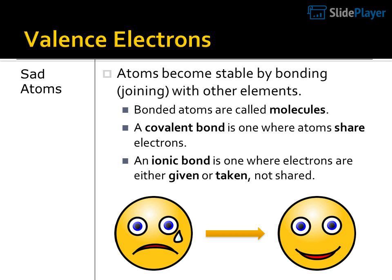Sad atoms. Atoms become stable by bonding — joining — with other elements. Bonded atoms are called molecules. A covalent bond is one where atoms share electrons. An ionic bond is one where electrons are either given or taken, not shared.